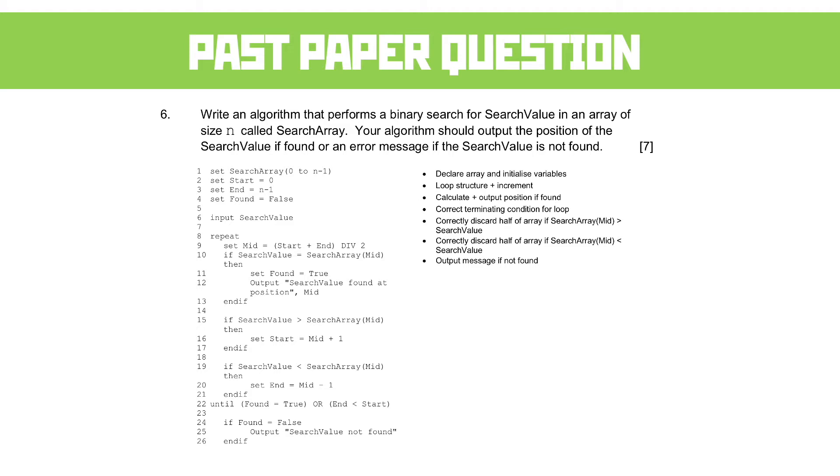Outputting a message if not found is also worth a mark, and that's quite a nice selection of marks there. So that code there is indicative content only - that's an example of what yours could have looked like. Yours will probably, let's be honest, look massively different to this. As long as you've got those bullet points within there, you're going to get your marks.